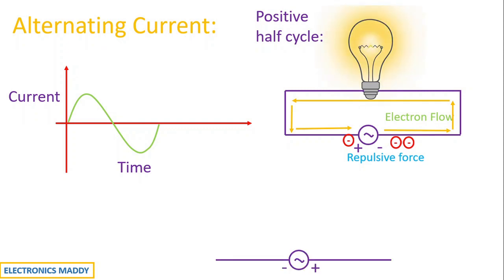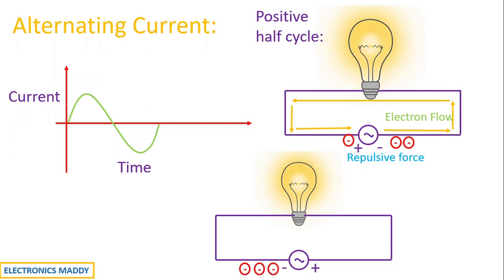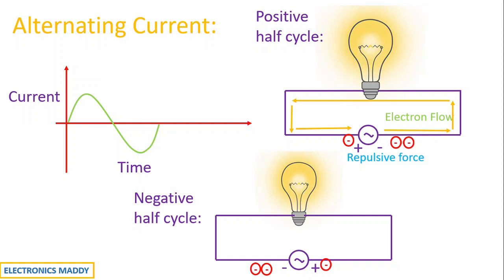During the negative half cycle, the supply polarity gets reversed. The electrons are considered in the opposite direction — each electron gains sufficient energy and hits the next, and the final electron gets attracted to the now-reversed positive terminal. So during the negative half cycle, the flow of electrons is in the opposite direction. That means the electrons start moving in one direction during one half cycle and reverse direction during the other half cycle.